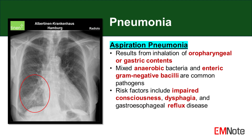Risk factors for aspiration pneumonia are primarily related to conditions that impair the protective mechanisms of the upper airway and esophagus. Impaired consciousness, whether due to sedation, neurological disorders, or intoxication, increases the risk of aspiration by reducing the gag reflex and cough response.